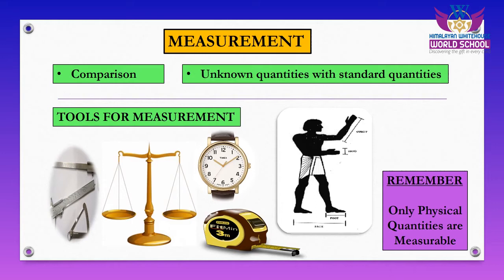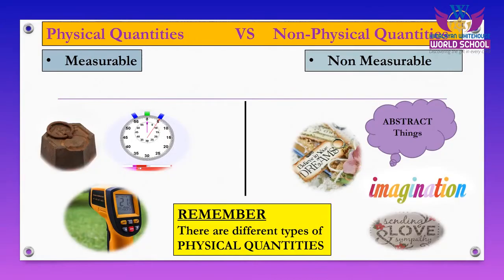Only physical quantities can be measured. But there are also some quantities which can never be measured — these are called non-physical quantities. Therefore, science has divided quantities into two types: physical quantities and non-physical quantities. Physical quantities can be measured, and non-physical quantities cannot be measured.